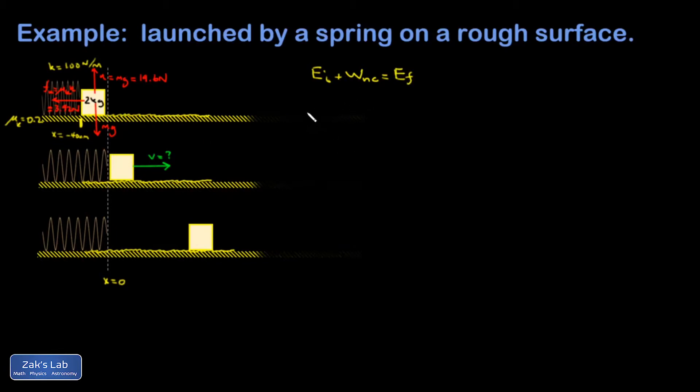And my initial energy, so nothing is moving, so I just have 1/2 kx initial squared, the spring potential energy. And then the work done by friction from here to here is going to be a negative fk, and then I'll just say delta x. And that's all going to be equal to the energy in my final state, which is no spring potential because it's expanded back to its equilibrium length, just kinetic energy.